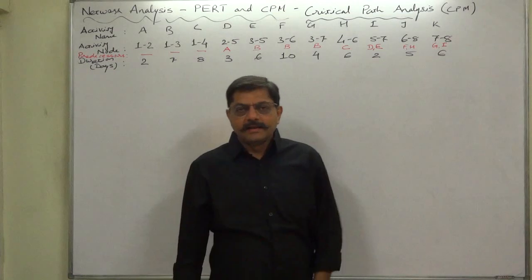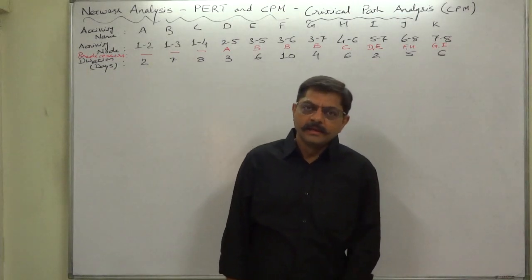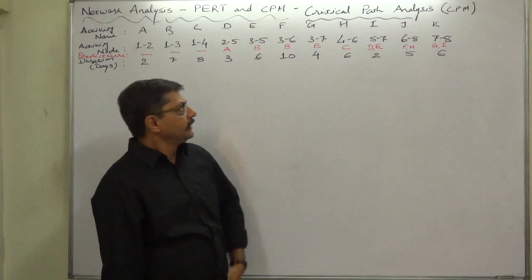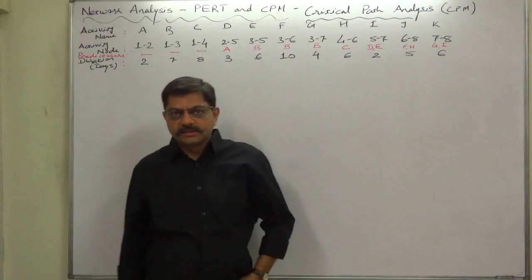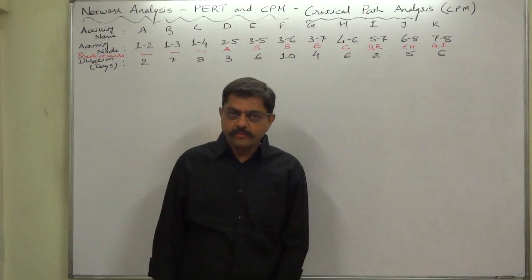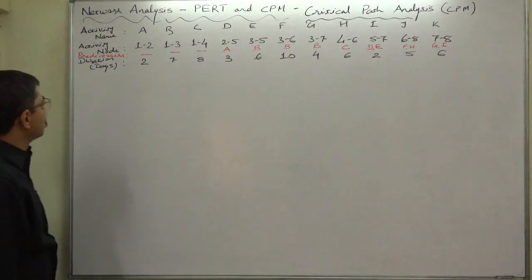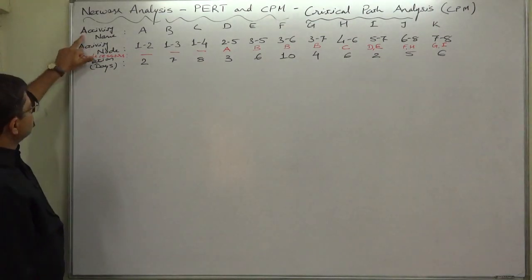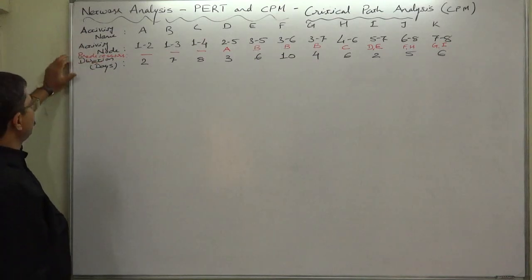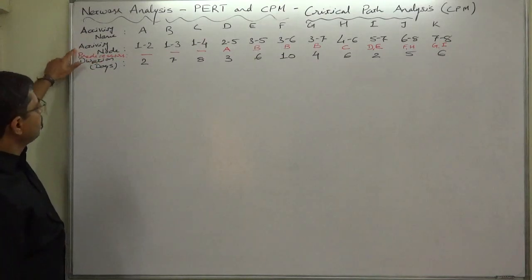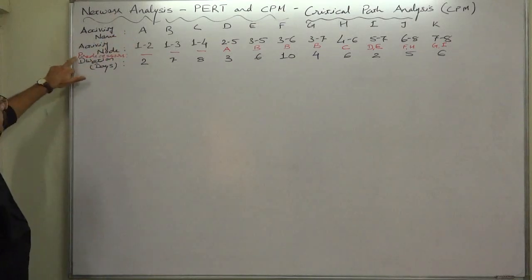Hello, namaskar and welcome to Network Analysis Part 10 - CPM. We are discussing critical path analysis and now have a new case where activities are from A to K. Activity nodes have been given for each activity.